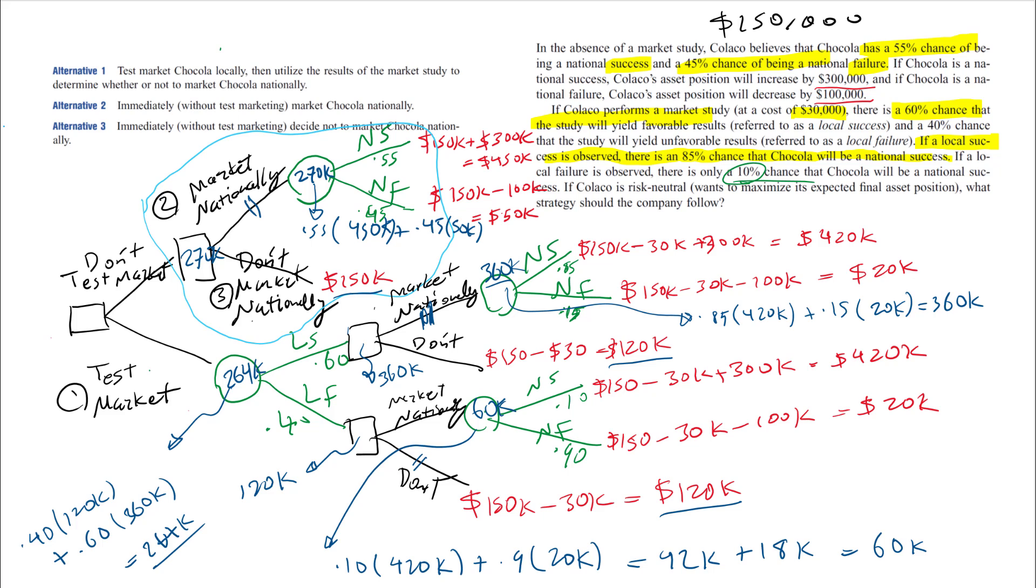The node before that is again a decision fork and I have the values at the end of each branch. I choose the largest value, which is here. By looking at the branches that I have marked, I know which decision is best for me, the most optimal.